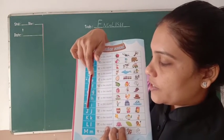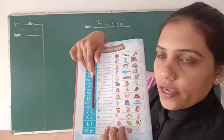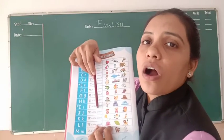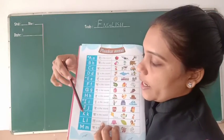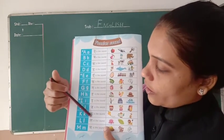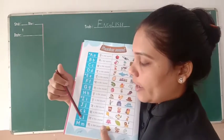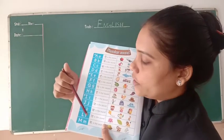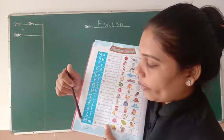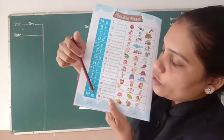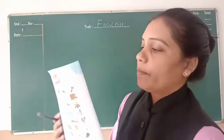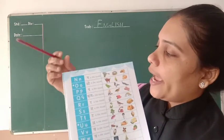J — capital J and small J. J is the sound. Capital K and small K — Kaw is the sound. Capital L and small L — Lo is the sound. Capital M and small M — Mo is the sound. Okay, then later M — page number 2 complete hua.